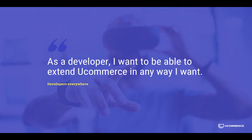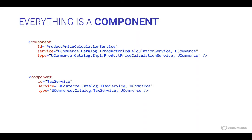So how do we get there? The basic premise of uCommerce is that everything is a component. We're looking at two examples of components: the first one is the price service calculations, which is the component responsible for calculating any price of products in the system. Next up is an example of the tax service, which has everything required to deal with taxes.